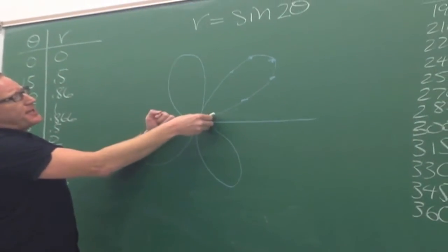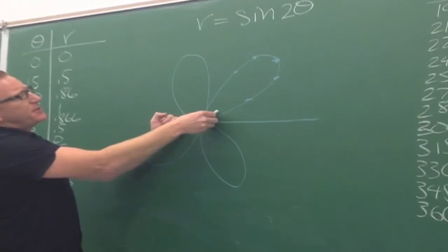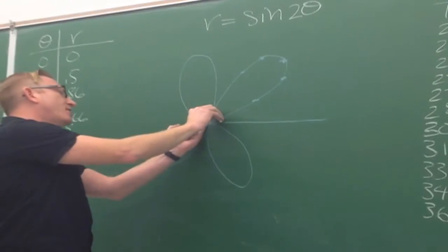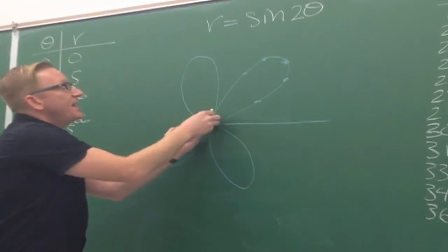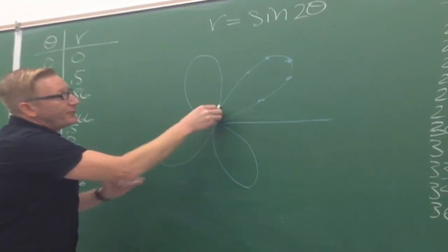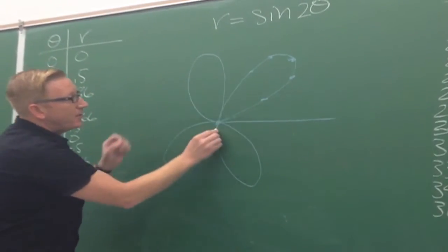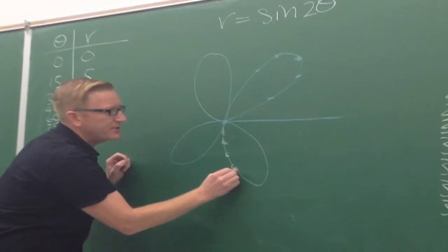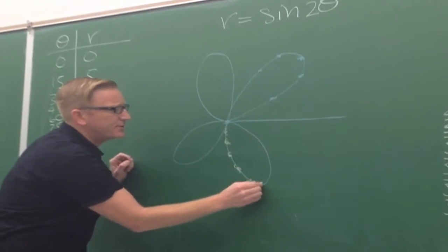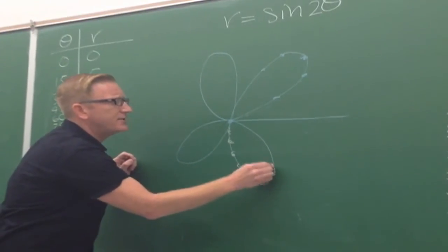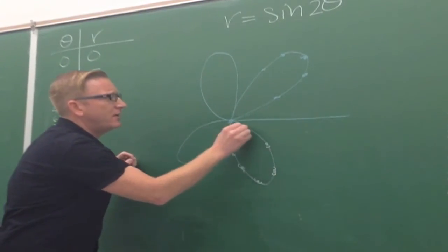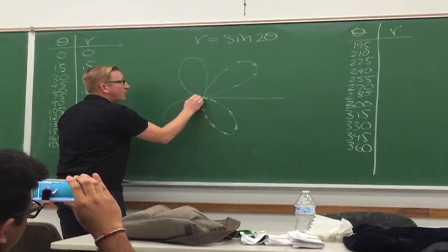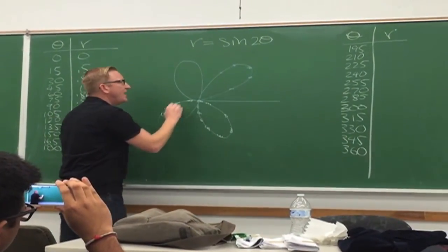Here we see our r's are positive, r's are positive. And then we get to 45 degrees, and then our r's switch to negative. Then r's are positive, positive, positive.